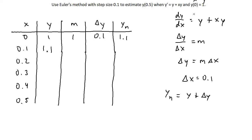When I do so, y is 1.1 and x is 0.1, so the slope is going to be equal to 1.1 plus x times y, so 0.1 times 1.1, and that will give you 1.21. That is our new slope.